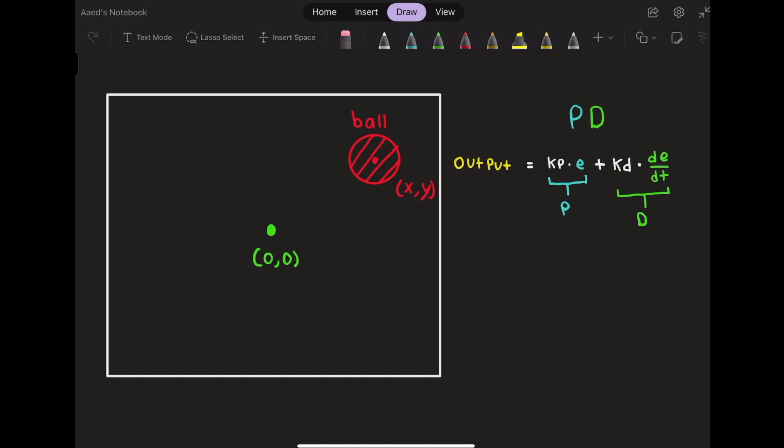Imagine we are viewing above the robot, and we can see the platform and the ball. In this project, the error, e, is defined as the vector pointing from the center of the platform to the center of the ball. In other words, since the center is defined as zero zero, the error is simply the location of the ball defined as xy.